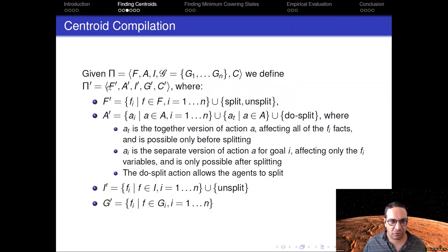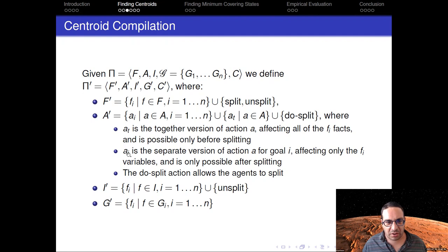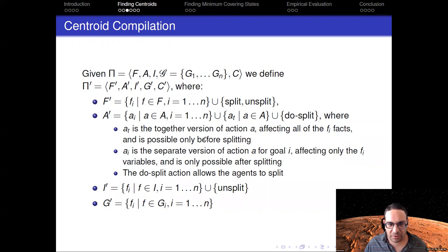More formally, the compilation creates a classical planning task π′ whose facts are fi for each fact in the original setting, f and each agent i, plus 'split' and 'unsplit'. So fi is a copy of the state of the world for agent i. For each action, there are n+1 different versions: one version which executes the action together — all agents execute action a together, affecting all fi variables — and ai, the separate version where only agent i executes action a. Agents can go together only before splitting, and go separately only after splitting. There's also a 'do split' action. The initial state is duplicated to all n copies, and the goal g′ is that agent i has achieved goal gi.